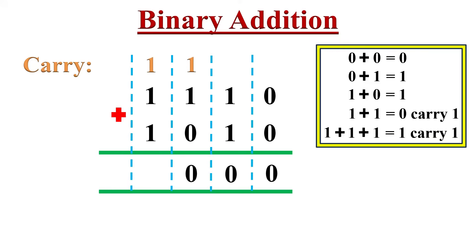In the last column, we have to add three 1s — two 1s of this column and 1 carry from the previous column. This will give answer 1 with a carry of 1 to the next column. Since we don't have any more columns for addition, we will directly write the 1 in the answer. This is the binary number we got after the addition.